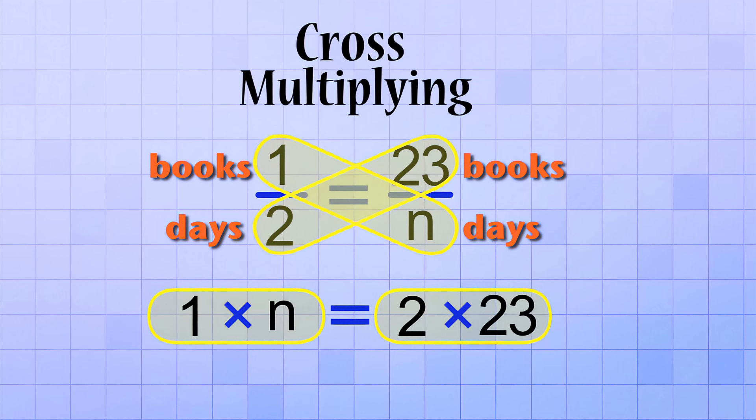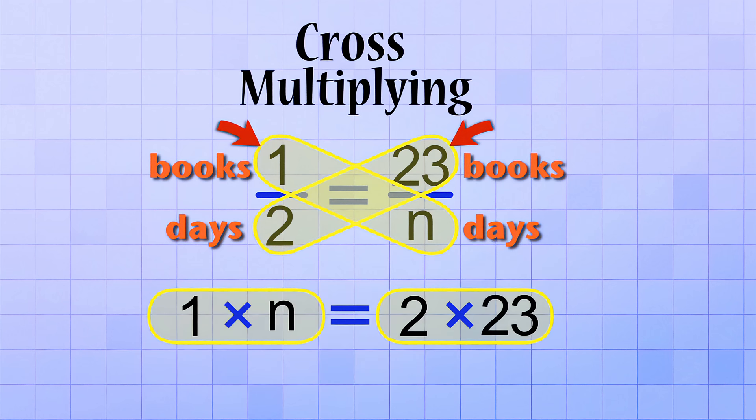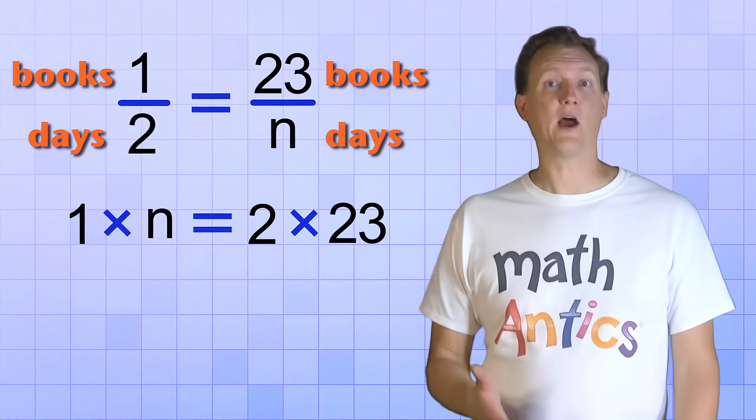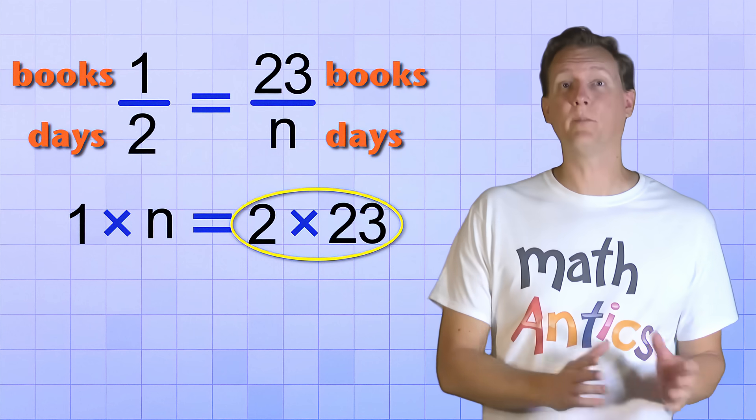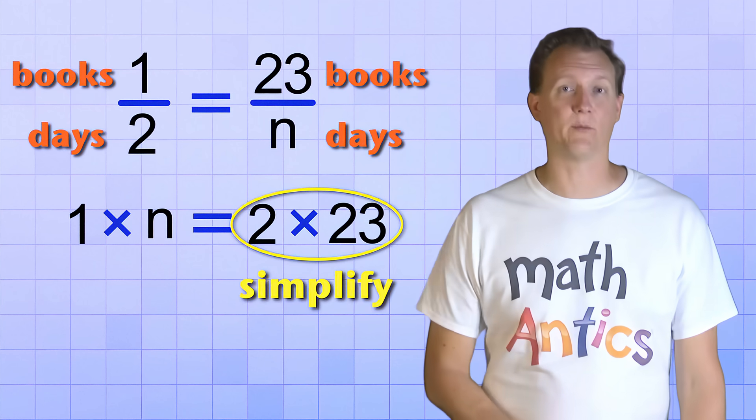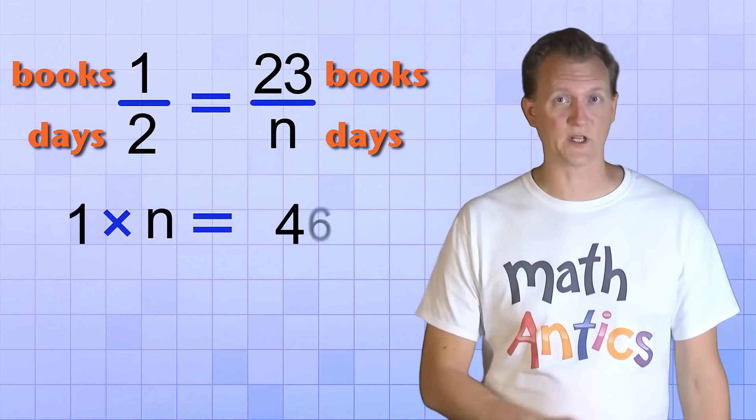And as long as you follow the criss-cross guides, it doesn't matter which pair goes on which side. Okay, so our proportion has been rearranged. Now what? Well, on one side of the new equation, we have two numbers being multiplied together. The next step is to go ahead and simplify by doing that multiplication. 2 times 23 equals 46.